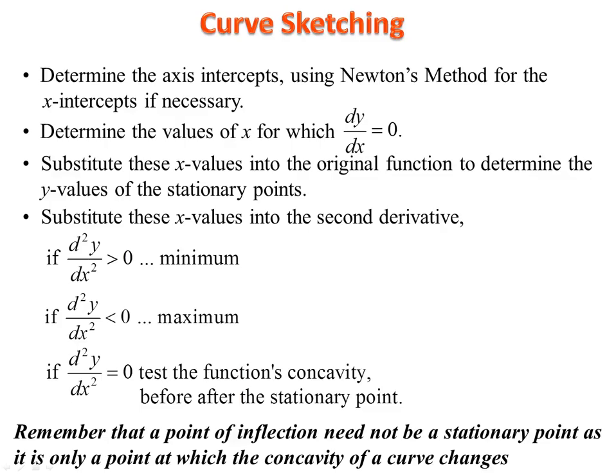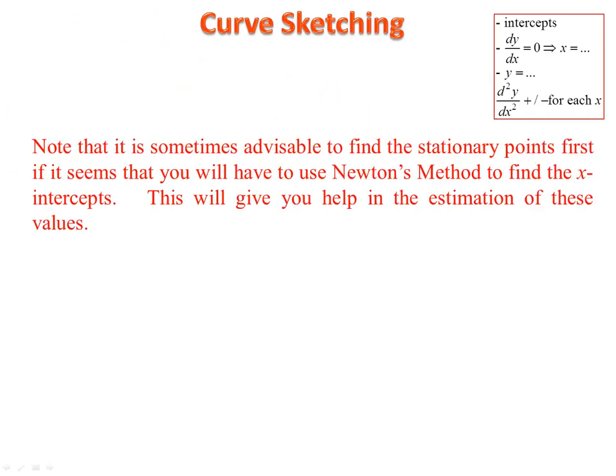Note that points of inflection do not have to be stationary points. Regarding the order of finding things: if you have to use Newton's method, you need to estimate the x-intercepts, and it's a good idea to first plot what you have — such as the local maxima and minima — because that will give you an idea of where the x-intercepts are going to be for an estimation.